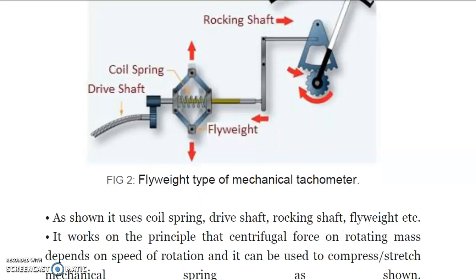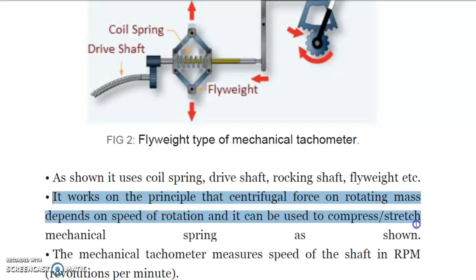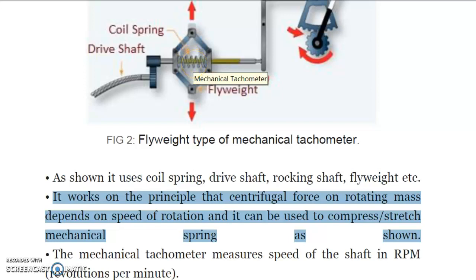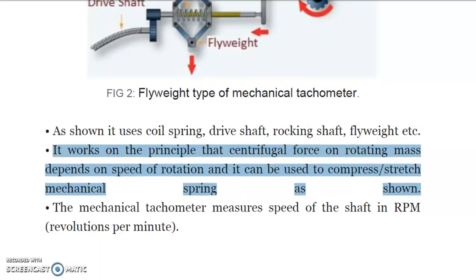It uses a coil spring, drive shaft, and rocking shaft, and works on the principle that the centrifugal force on a rotating mass depends on the speed of rotation and can be used to compress or stretch a mechanical spring. This mechanical spring can be stressed or compressed based on the rotation of the drive shaft, and it measures speed in RPM.